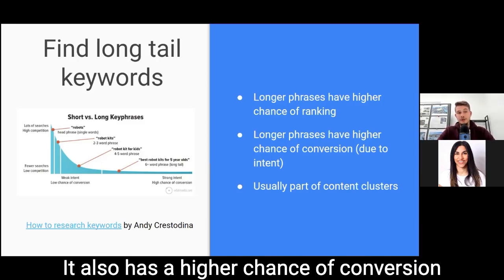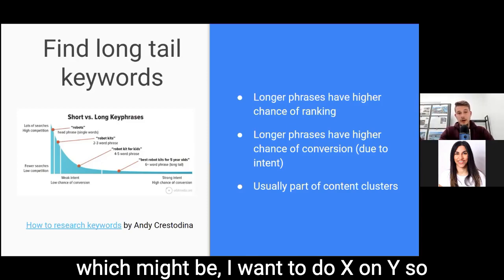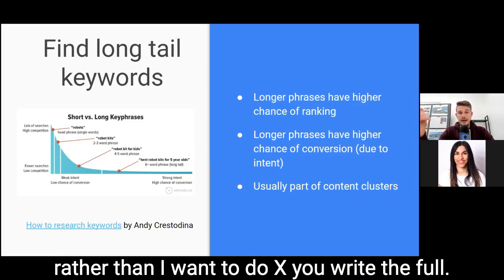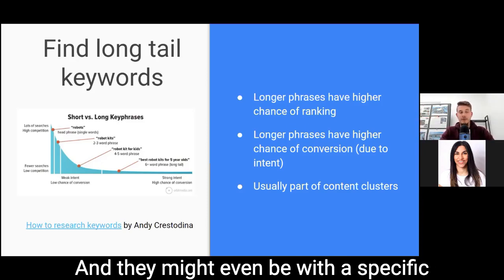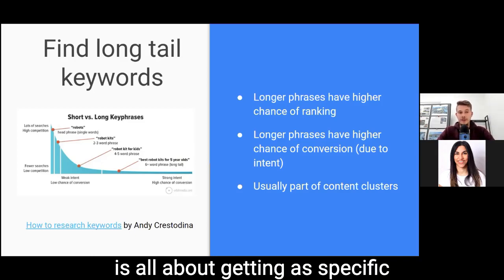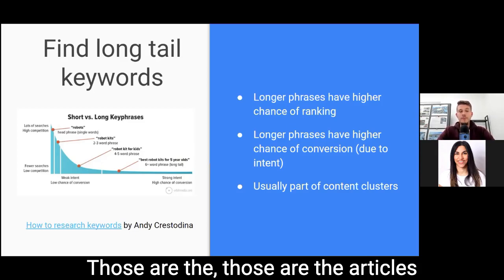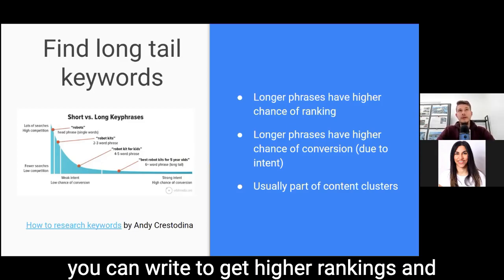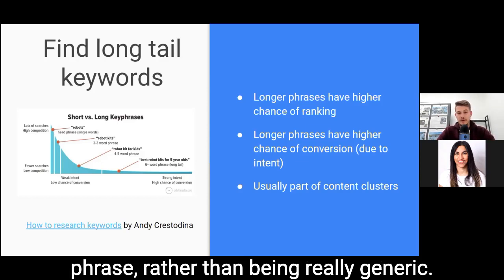A more targeted key phrase also has a higher chance of conversion because you're getting more specific. It might be part of your content cluster — rather than writing about 'I want to do X,' you write the full key phrase 'I want to do X on Y,' and it might even include a specific device or platform. Finding long-tail keywords is all about getting as specific as possible in your blog posts to get higher rankings and more traffic.